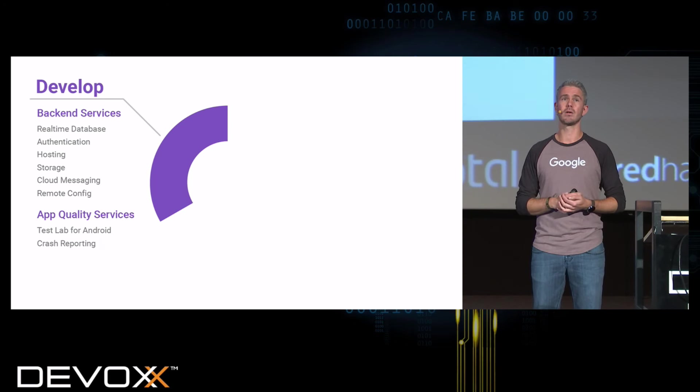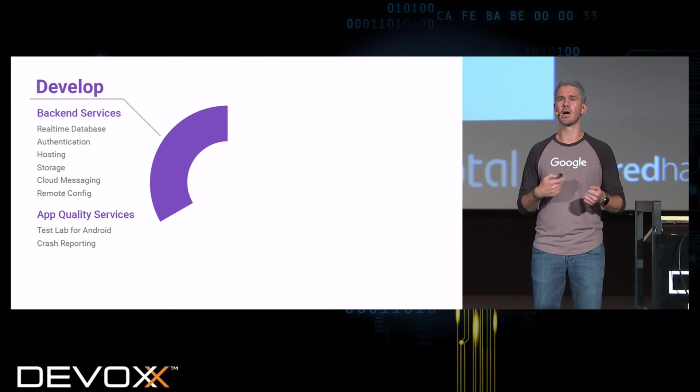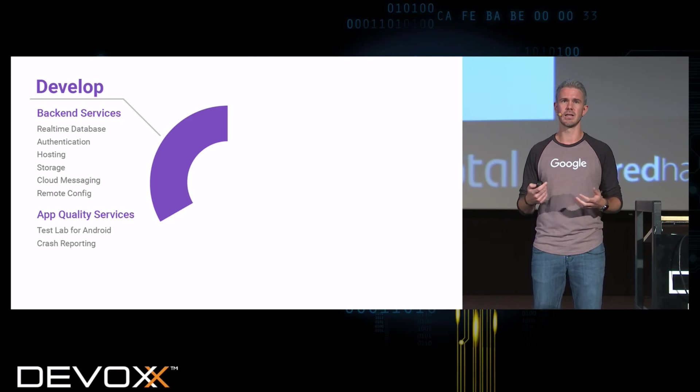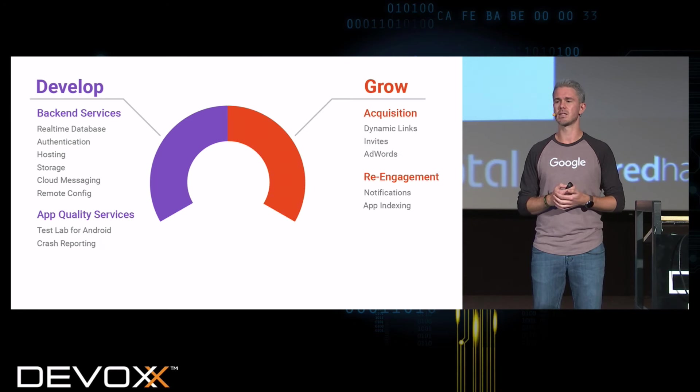Those are the main ones for web, which is what we'll talk about today. There are a few others for native mobile apps — the Test Lab, which lets you test your Android application on hundreds of virtual and physical Android devices, and Crash Reporting, which lets you monitor and resolve application-not-responding errors and things like that.